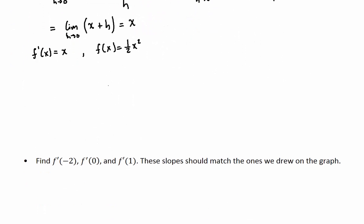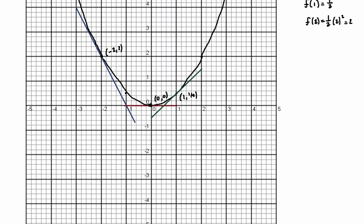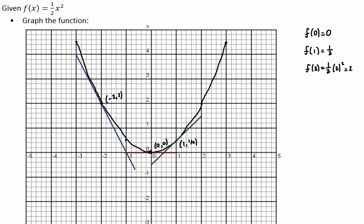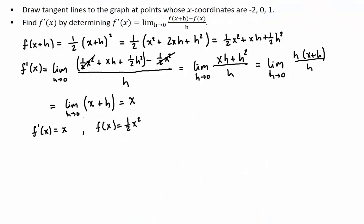It says find f prime at negative 2. So what do I do? I just evaluate the function I just obtained at negative 2. So at negative 2, you plug it in, you get negative 2. So this is going to be the slope of the blue tangent line. So let's go check. The slope of this line, you see how when you move one unit to the right, you are moving two units down. So that's telling you that this slope right here is negative 2, just as we found with our derivative.